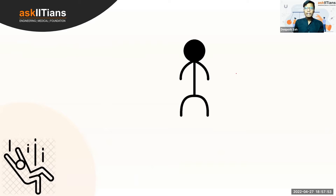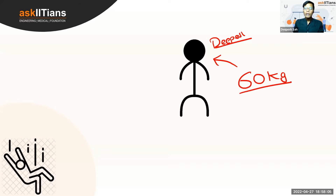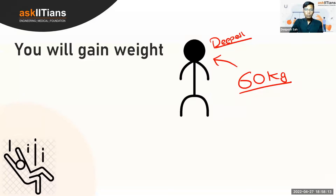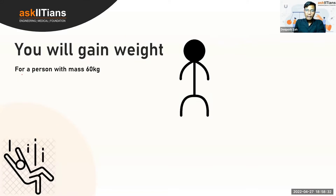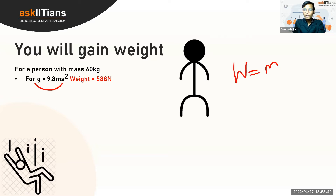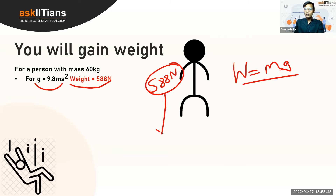Let's understand this with a real example. Let's say a person named Dipesh has a mass of 60 kg. How much weight — that is, how much force — is he applying on Earth? Using the formula W = m × g, with g equal to 9.8, the weight of this person is 588 Newtons. That is how much force he is applying on the surface of Earth.